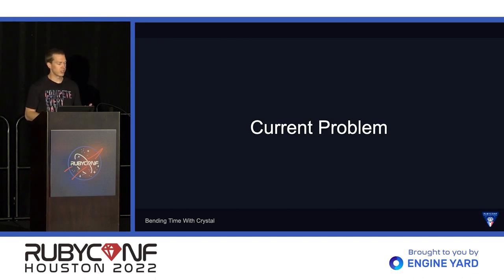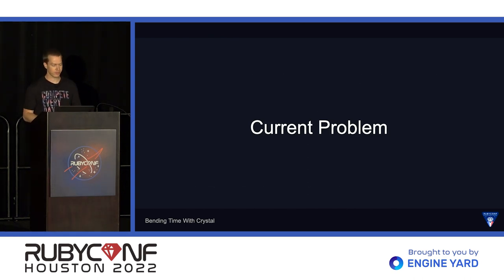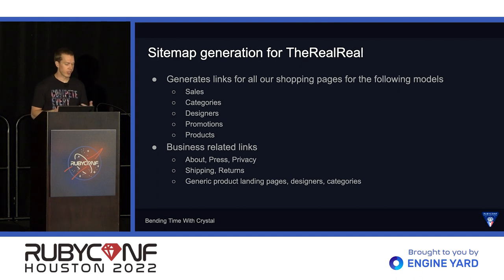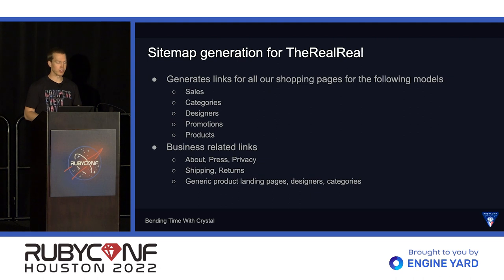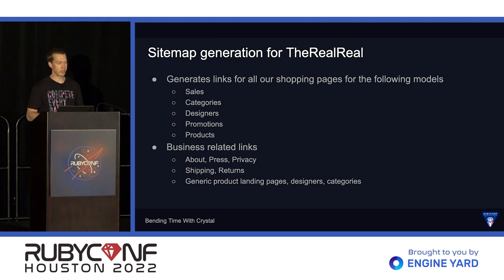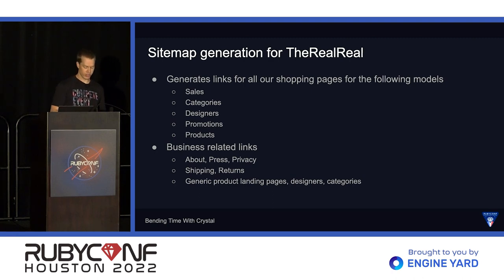Let's take a look at our current problem that we're dealing with at The RealReal, which is sitemap generation. We generate links for all of our shopping pages to be indexed in search engines. This includes every sale, every product category, designer, promotion, and every product that's currently for sale. We also include some business-related links such as About Us, press pages, shipping return info — pretty much all the standard things that you would want indexed in search engines.